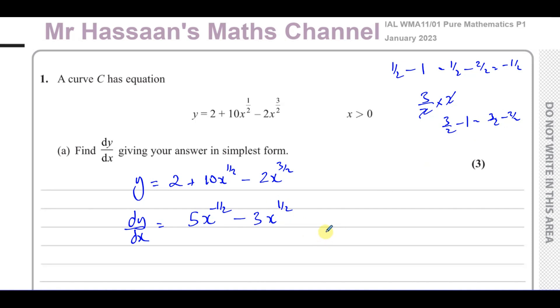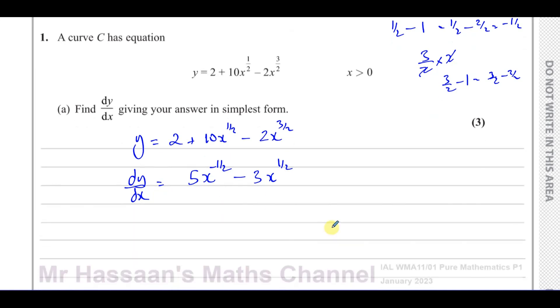3 marks. You can take away marks there. So that's the answer in its simplest form. That's fine. If you want to, you can write this as 5 over x to the power of 1 half minus 3x to the power of 1 half. If you want to, that's fine.